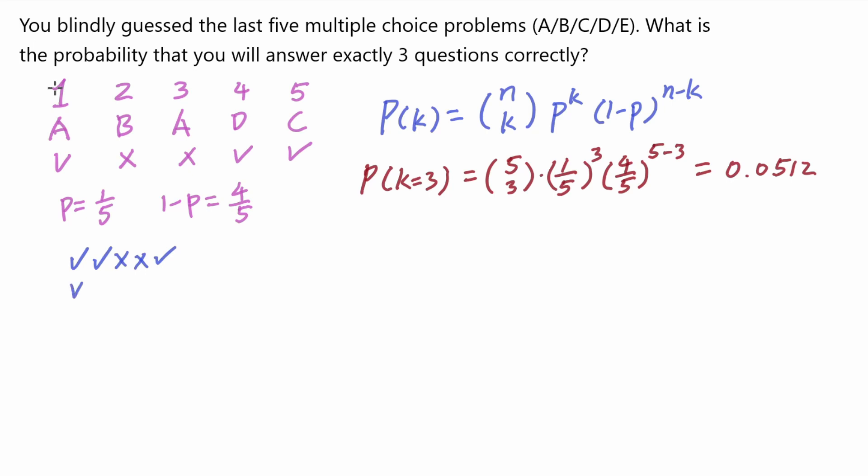Or you could be answering the first question correct, second question correct, third one correct, and the next two wrong. I'm just enumerating all the possibilities. So how many ways are there?